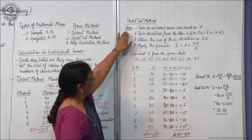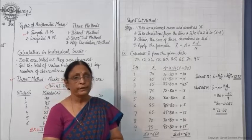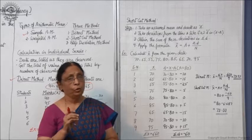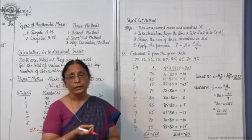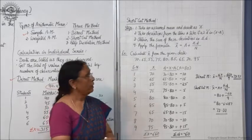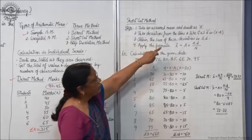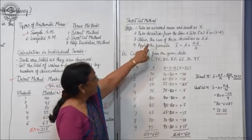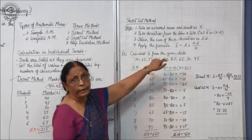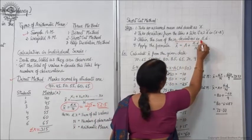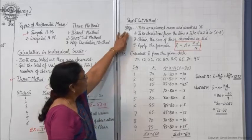The steps for the shortcut method are: first, take an assumed mean and denote it as A. Then take deviations for the items, denoted as D, which is X minus A. Next, obtain the sum of these deviations, that is σD. Finally, apply the formula: X̄ = A + (σD / N). We will take an example to clarify these steps.